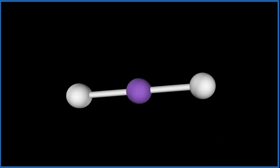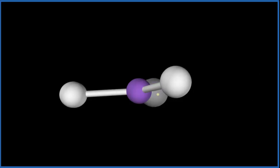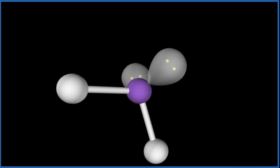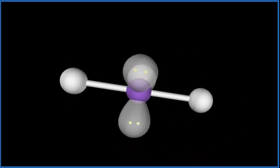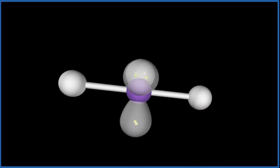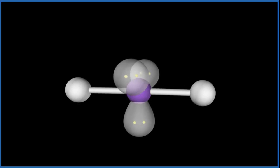And then we add the lone pairs. Lone pairs, they occupy space and they'll repel each other and these atoms here. One forces everything down, two, and then finally the last one. Because of the symmetry here, we end up with a linear molecular geometry for XeF2 because of these three lone pairs.